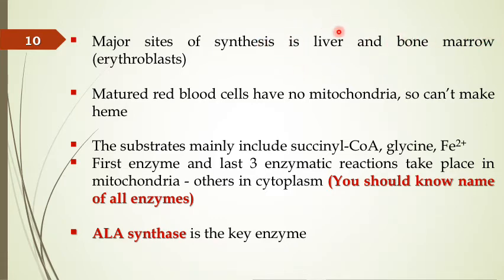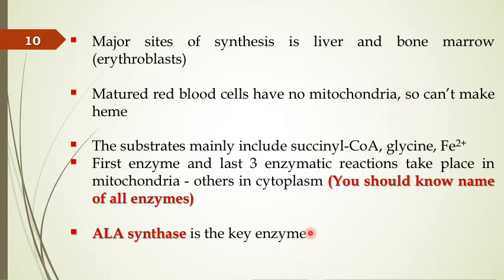The liver synthesizes enzymes for hemoproteins, but hemoglobin is mainly synthesized in the bone marrow. Erythroblasts (precursors of erythrocytes, also called reticulocytes) synthesize heme in the bone marrow. Mature red blood cells have no mitochondria — they have a single function: carrying oxygen from the lungs to tissues and CO₂ back to the lungs. Therefore, RBCs need no nucleus and no mitochondria; their lifespan is 120 days.